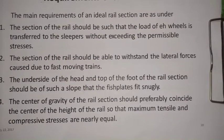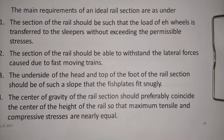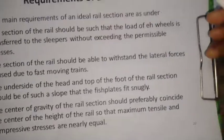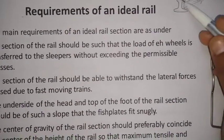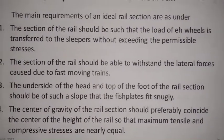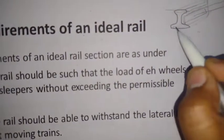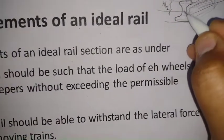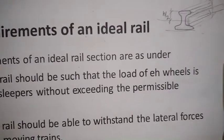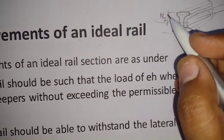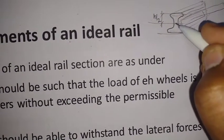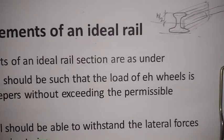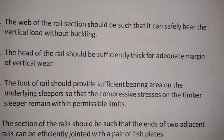The fourth point: the center of gravity of the rail section should preferably coincide with the center of the height of the rail, so that the maximum tensile and compressive stresses are nearly equal. The center of the height means h/2. The CG of this I-section rail should preferably coincide with that central height h/2, in order to maintain equal maximum tensile and compressive stresses.